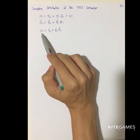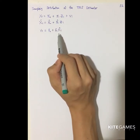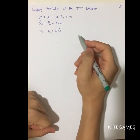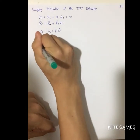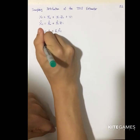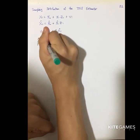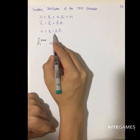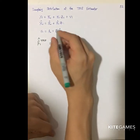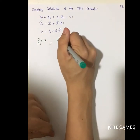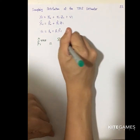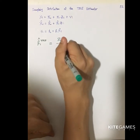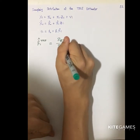Second, you regress Y with respect to your estimate of X. After that, you can find beta_1-hat by the two-stage least squares. At the end, the beta_1-hat estimate will be equal to the sample covariance of Z and Y divided by the sample covariance of Z and X.